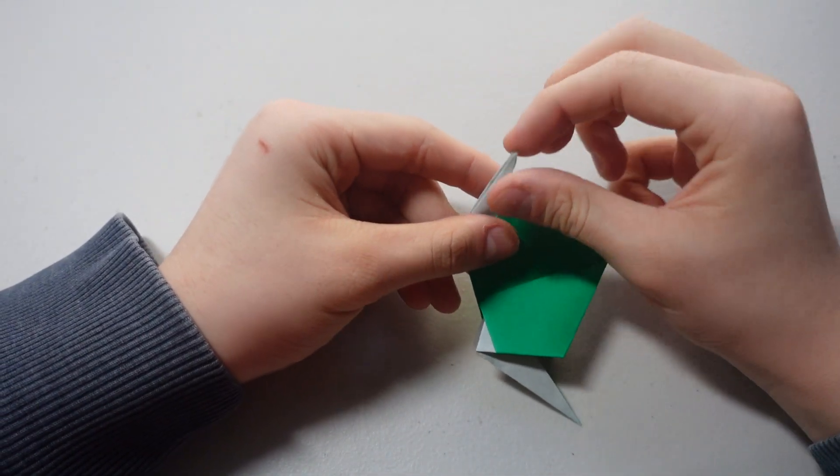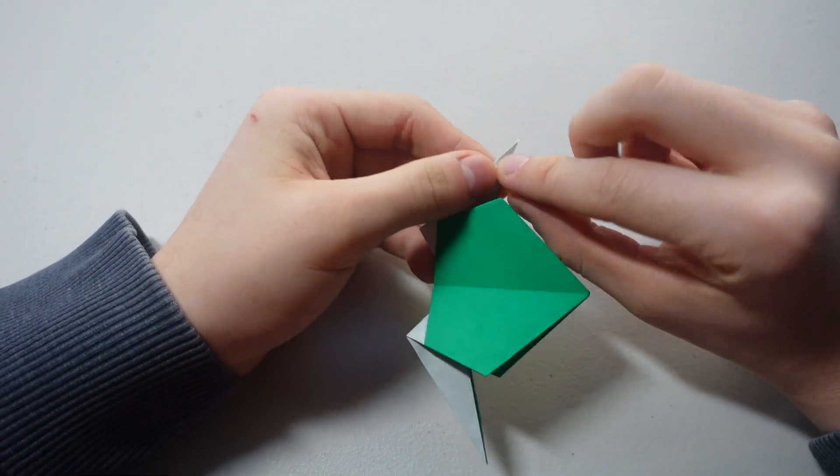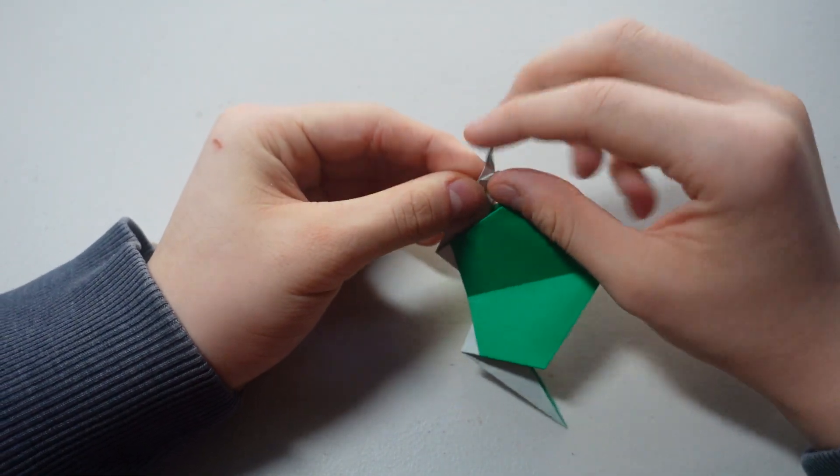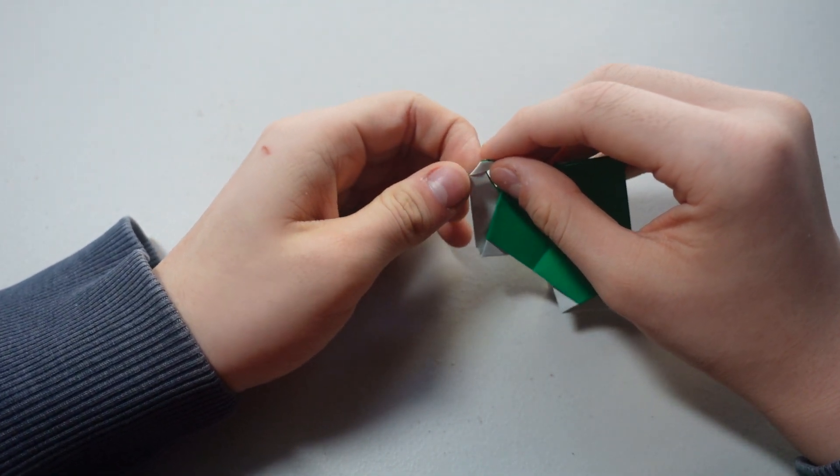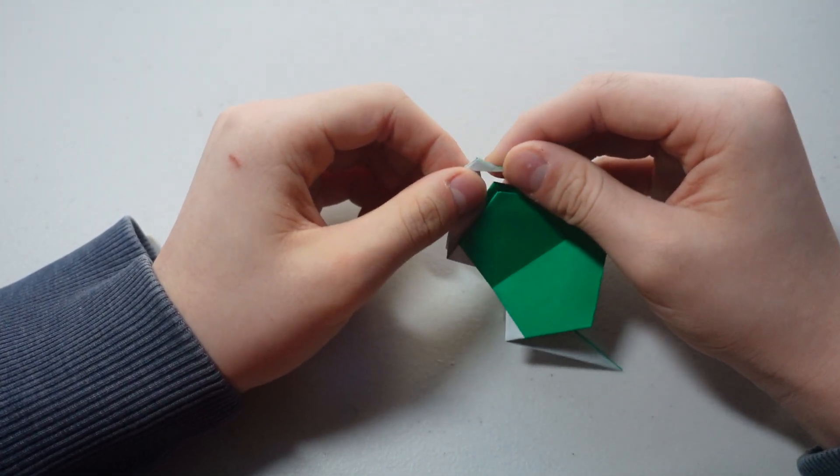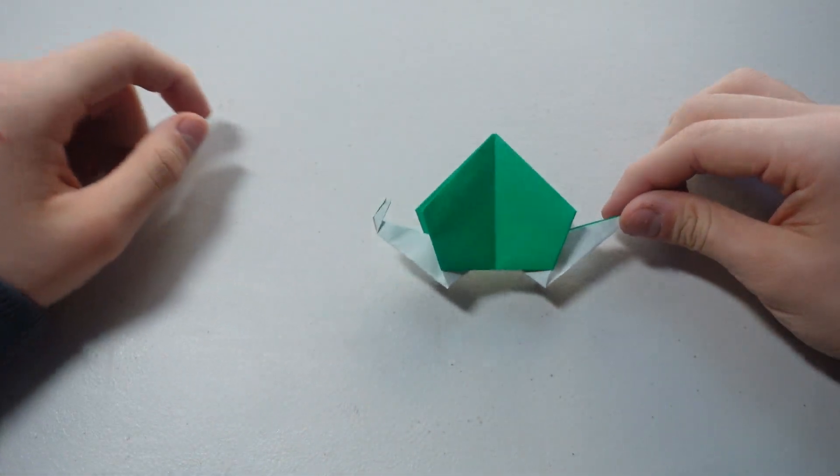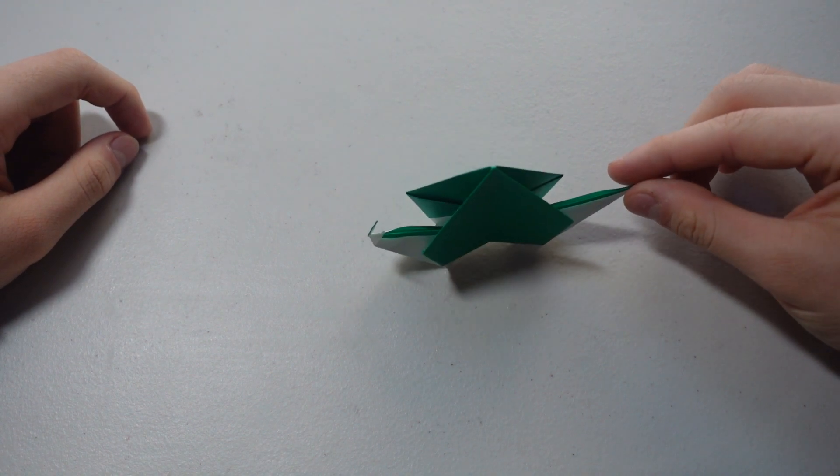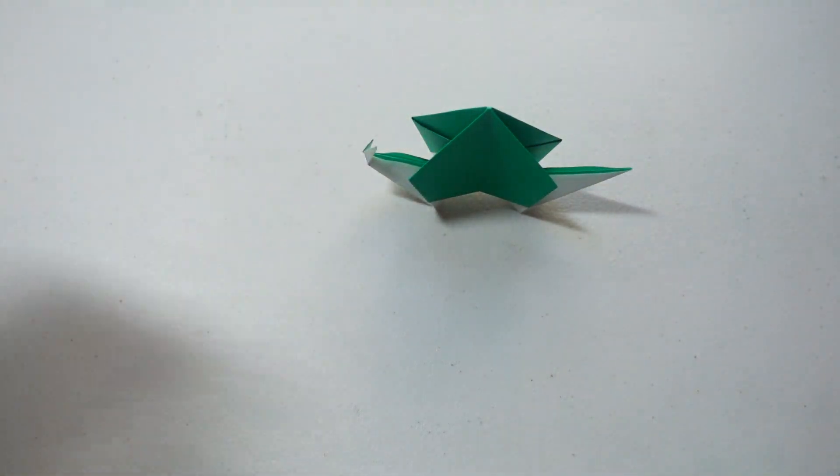Alright, so we got this. We're just gonna fold this part up like that and do the same thing on the other side. There you go, and that's it. It's a green snail. Okay, thank you for watching my video, and on my next video I'll be doing more origami. Thank you.